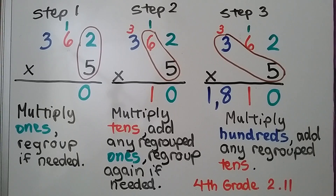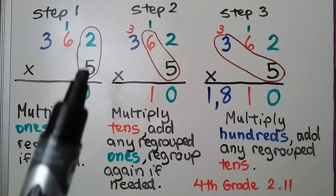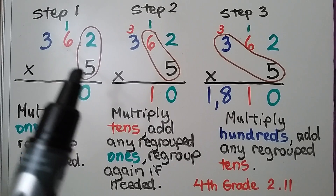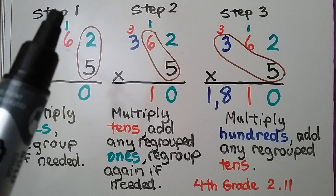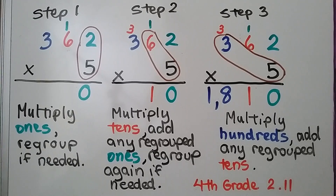So, we need to multiply 362 times five. Step one: the first thing we do is multiply the ones place and regroup if needed. We have five times two, that's ten. We regroup the one and write the zero down here.